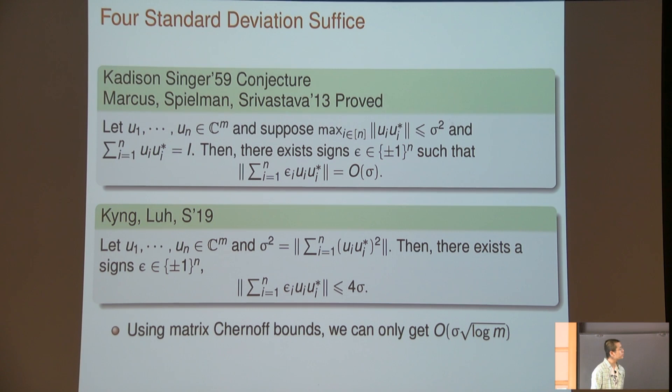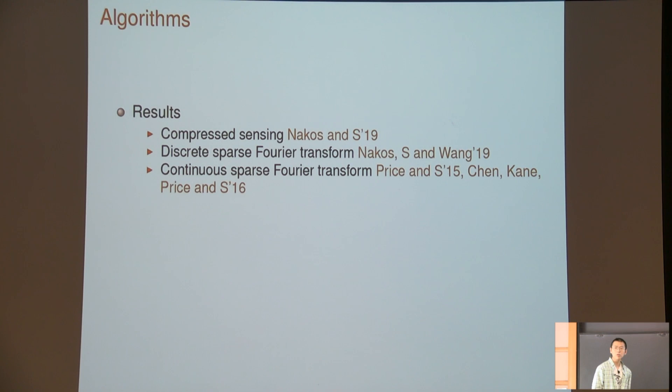This is something related to a kind of similar conjecture. Here you give a bunch of vectors, and you assume each of them has maximum norm sigma, and their summation has to equal the identity. Then you can show something like a discrepancy result—there exist signs such that the summation of epsilon_i times these rank-one matrices is at most O of sigma. What we can prove is we can actually weaken the condition in the statement, replacing the summation equals identity—we don't need this condition. Also, instead of assuming each vector is bounded, we just need the summation of all the squares is bounded. And we can show four here, and we call our paper Four Standard Deviations Suffice, compared to six. You also can see the reason why we do this one is because if you use Chernoff, you will pay a root log M factor, where M is the number of vectors.